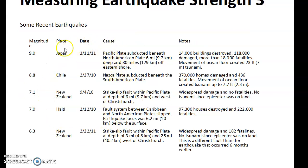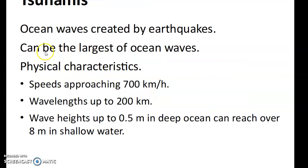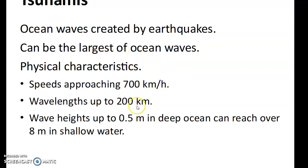Some recent major earthquakes: looking at the magnitude, place, and time — there were significant events in 2010 and 2011. You'll see all of these are on the Nazca plate or the Pacific plate. Tsunamis are ocean waves created by earthquakes and can be the largest of ocean waves, with speeds reaching up to 700 kilometers per hour. Most of the damage from the 2011 Japan earthquake was due to the tsunami, not the earthquake itself.